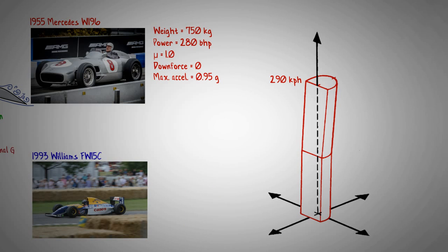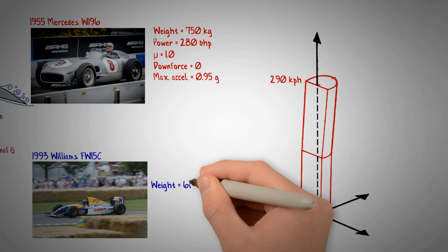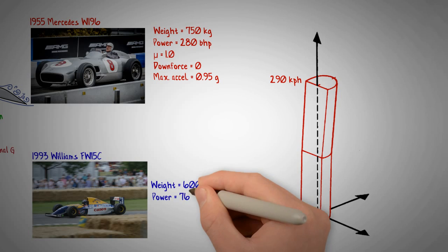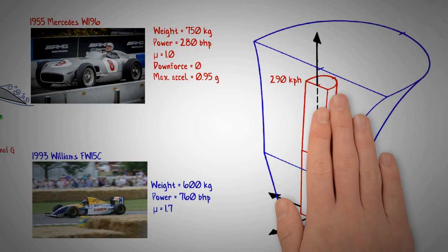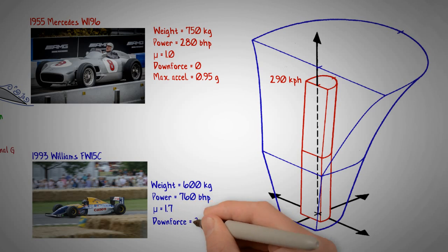Now let's take the 1993 Williams Renault FW15C, which was designed well after engineers understood the importance of aerodynamic downforce. As downforce increases in proportion to the speed squared, its performance envelope will gradually grow wider as speed increases, and the car will be capable of cornering and braking at much higher G at high speeds.